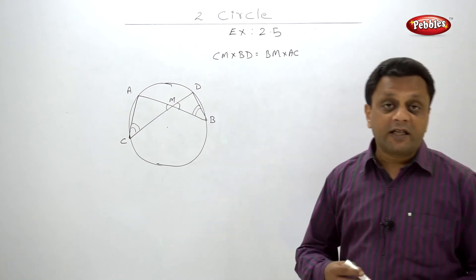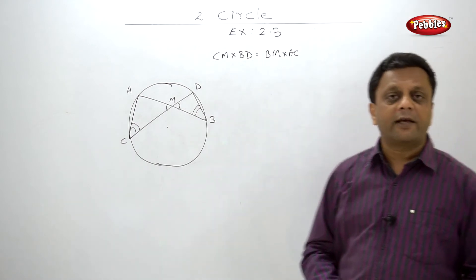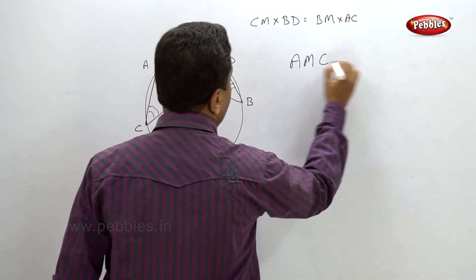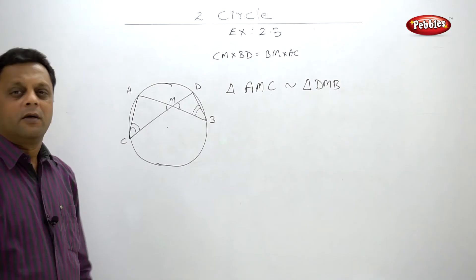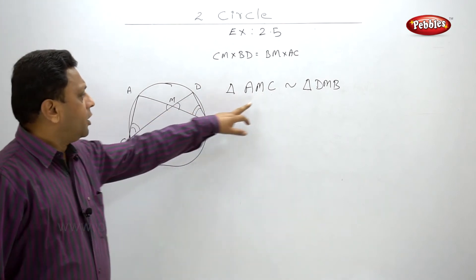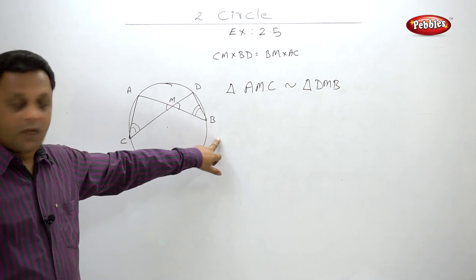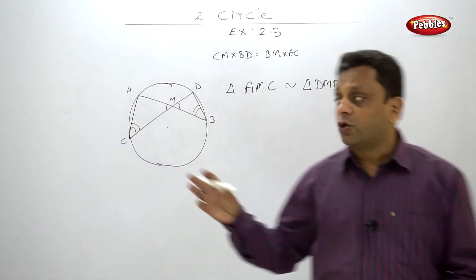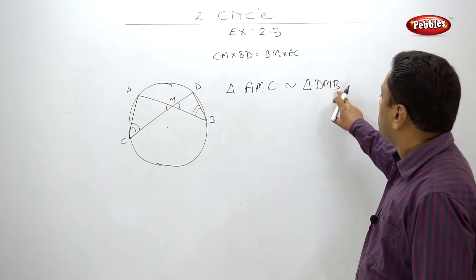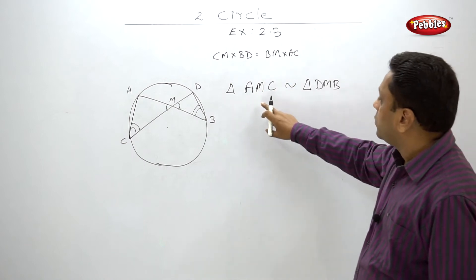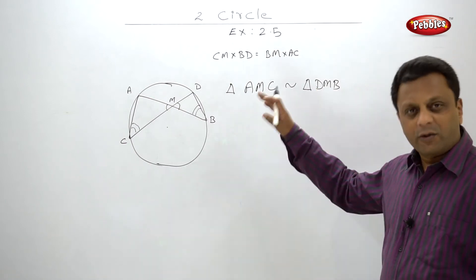The key is writing the names of the similar triangles correctly. Triangle AMC is similar to triangle DMB. I have taken the point of intersection at the center: writing A here corresponds to D, then C and B. Now write the ratio: CM upon BM is equal to BD upon AC.